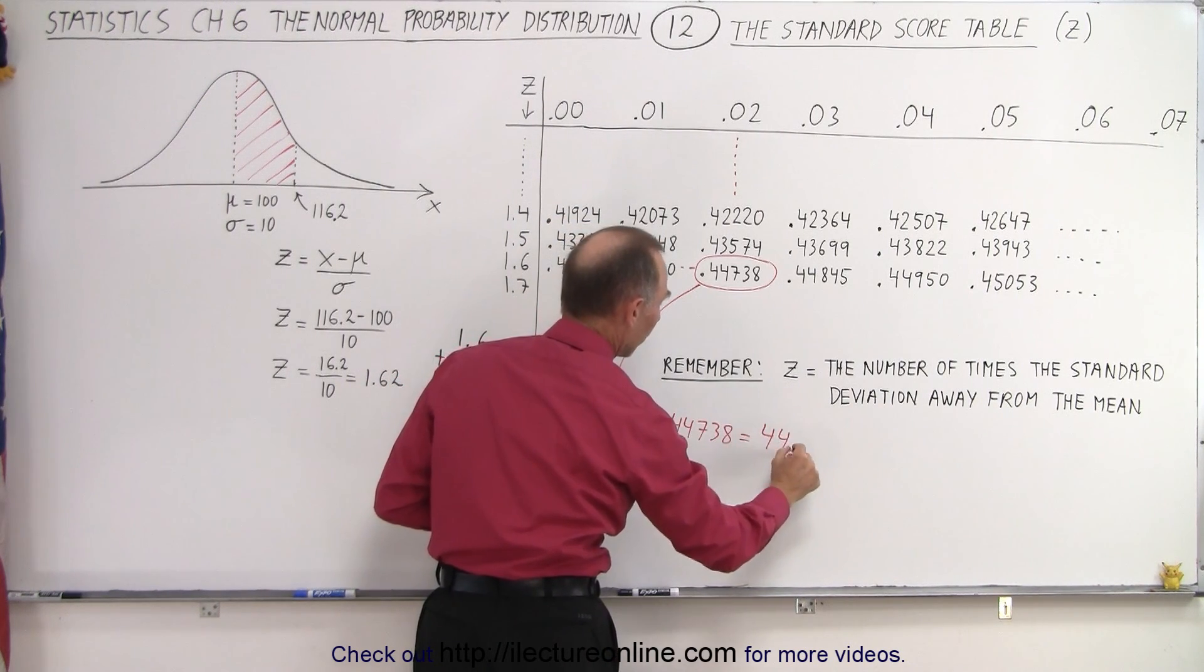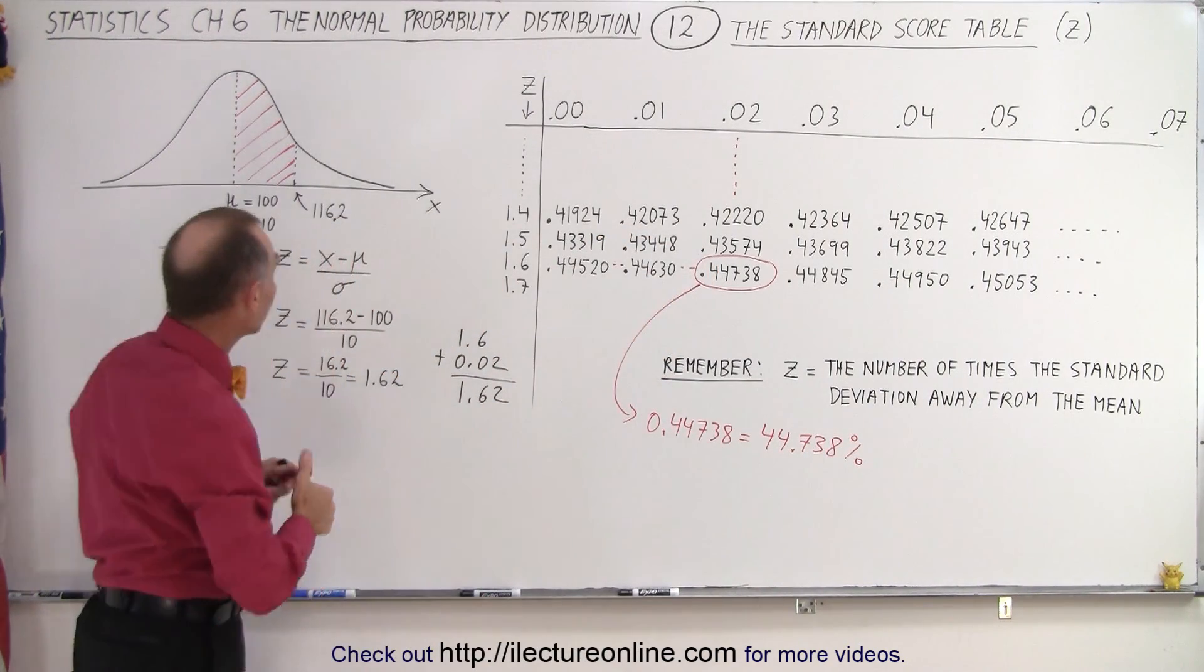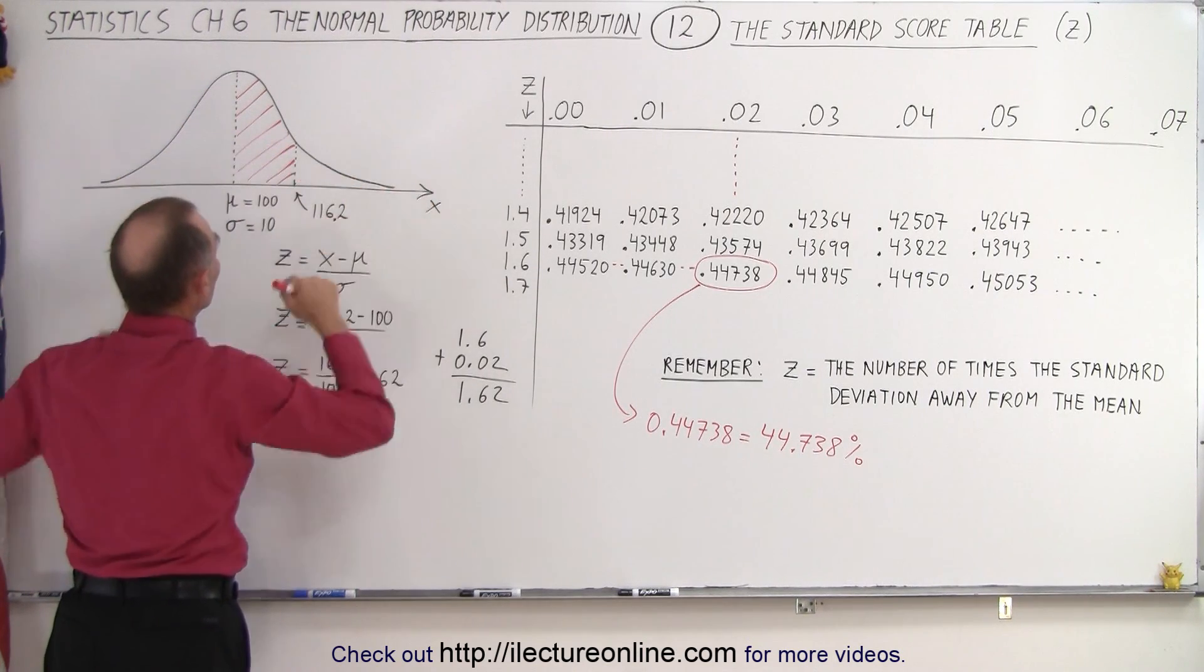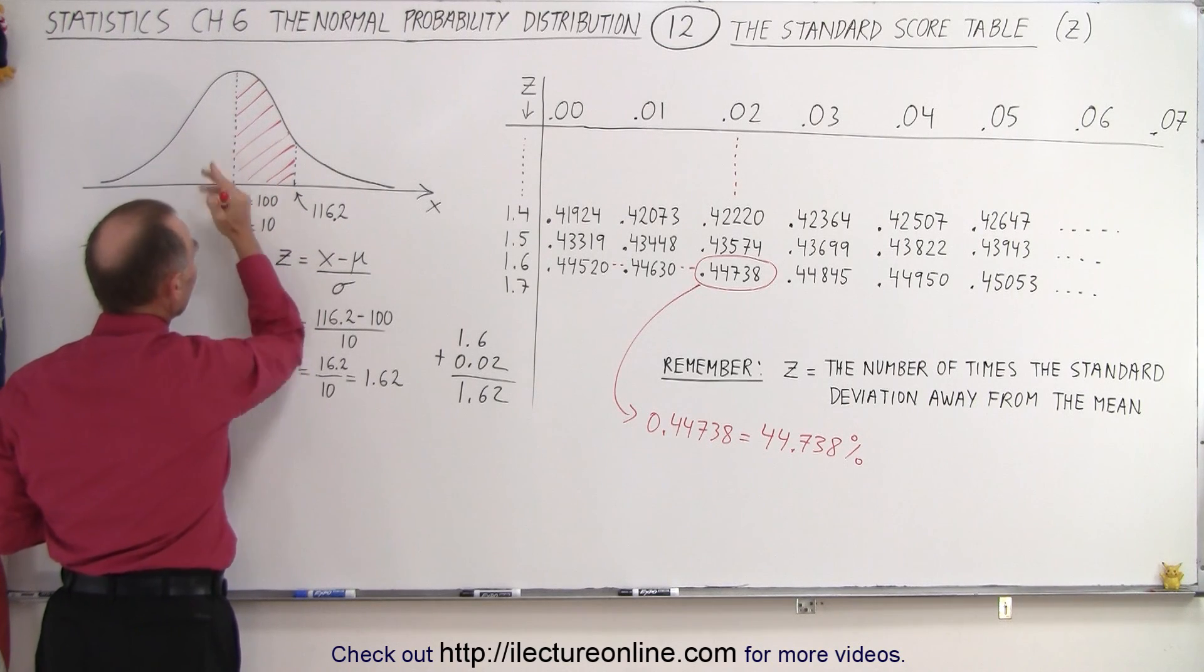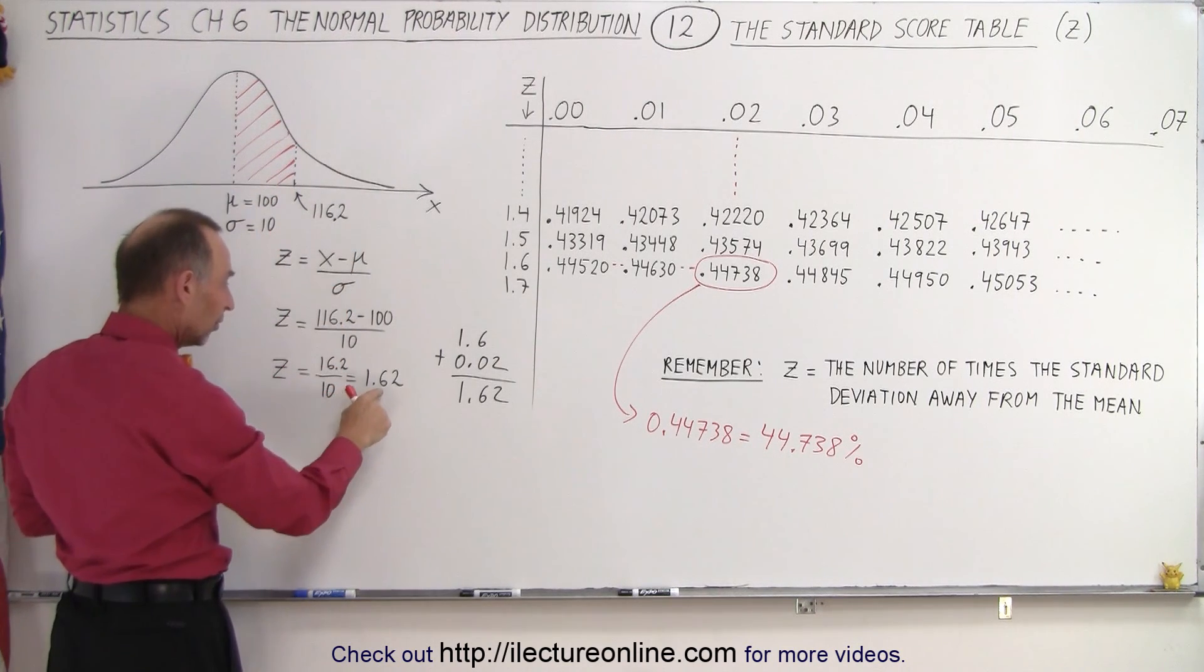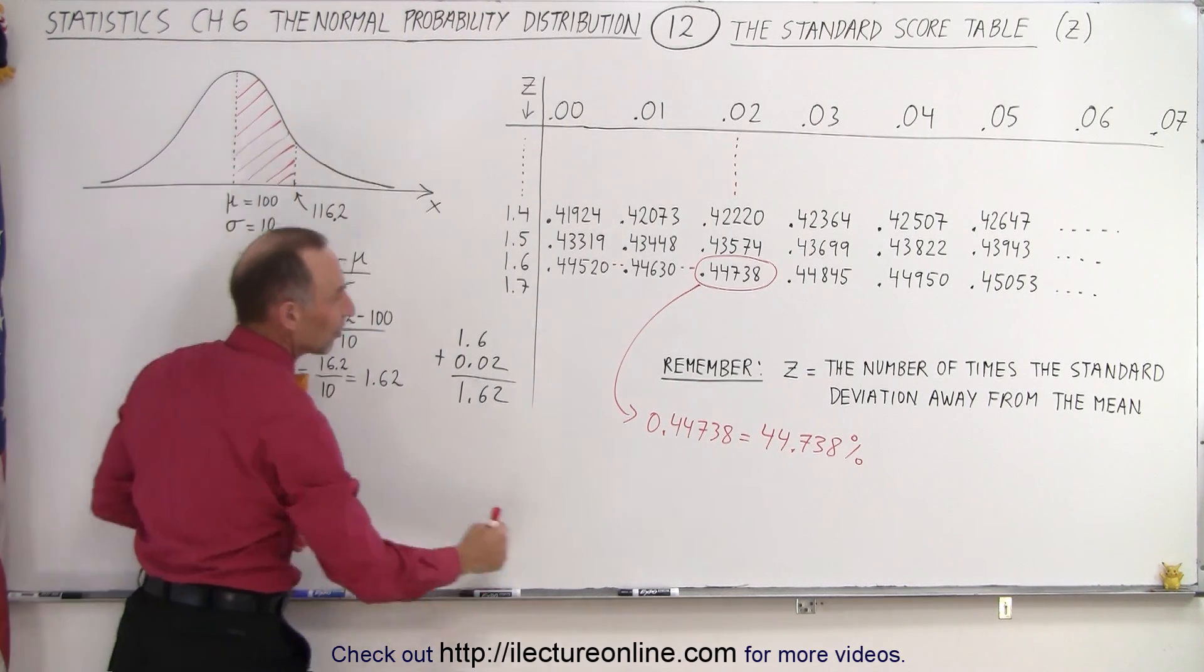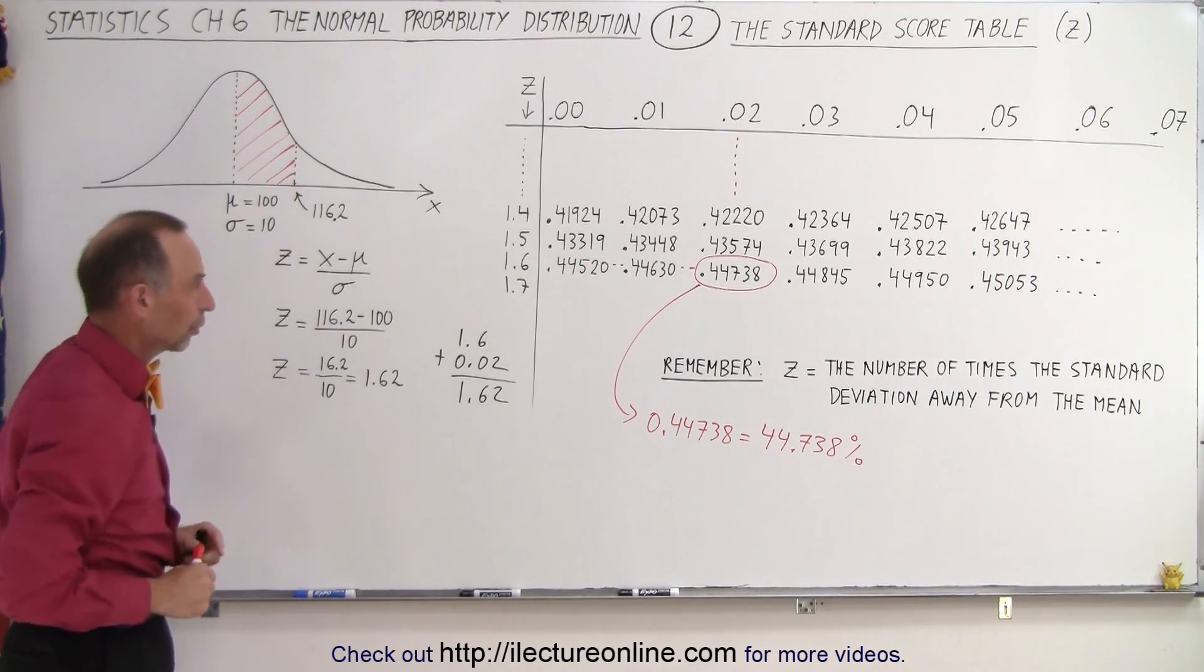So essentially we could say that 0.4738 is equal to 47.38%. So essentially that's almost 45% of the total area underneath that distribution curve. So all the values that fall between the mean and 1.62 times the standard deviation away from the mean, all those points represent 47.38% of all the values underneath the curve.